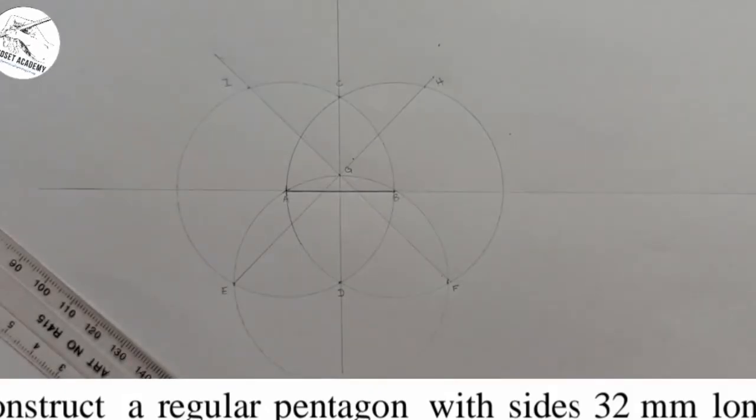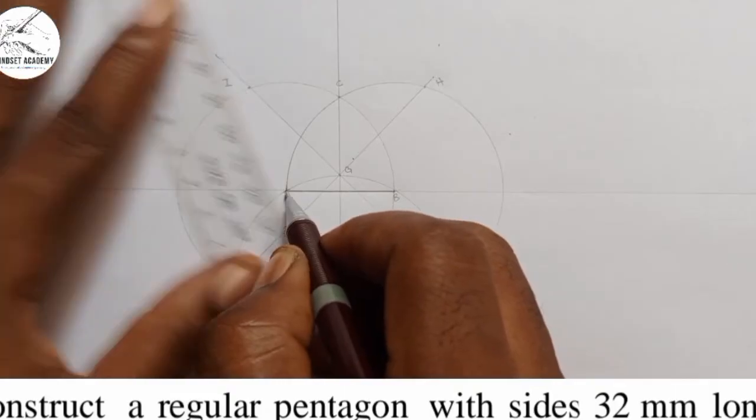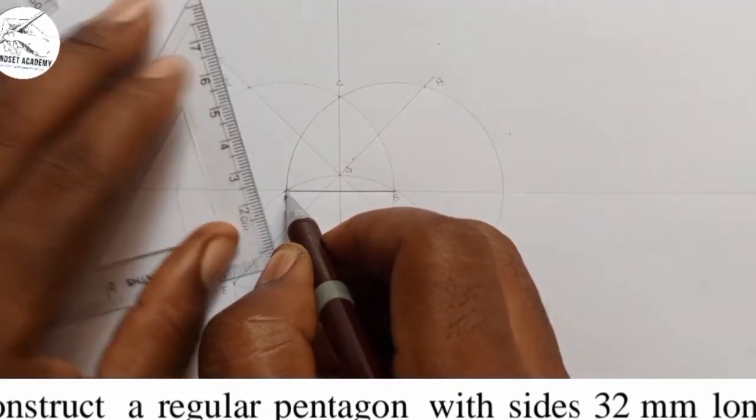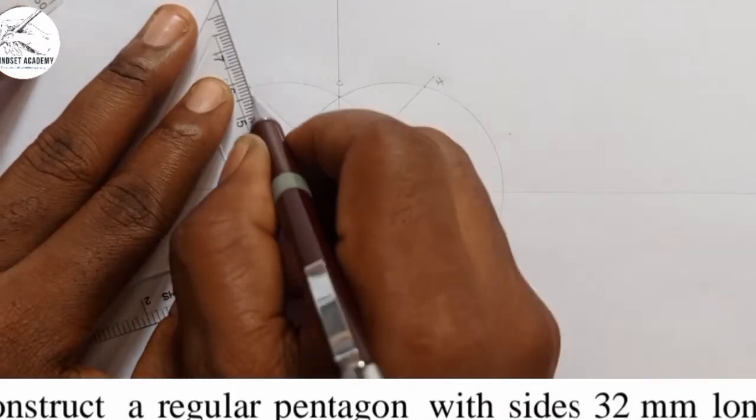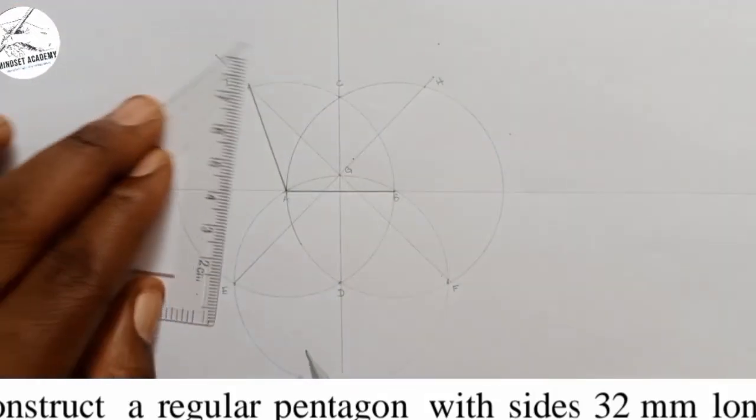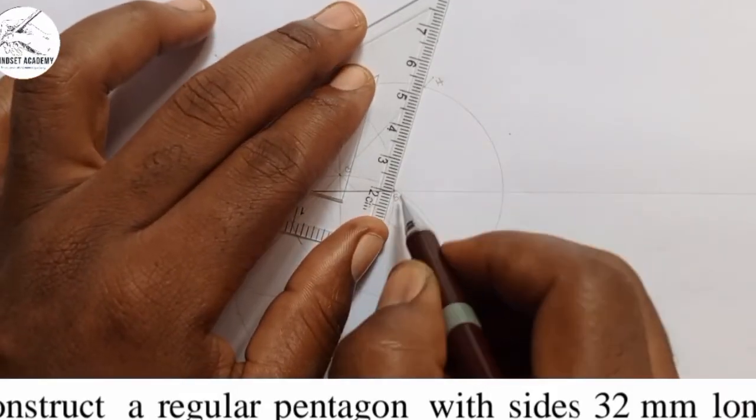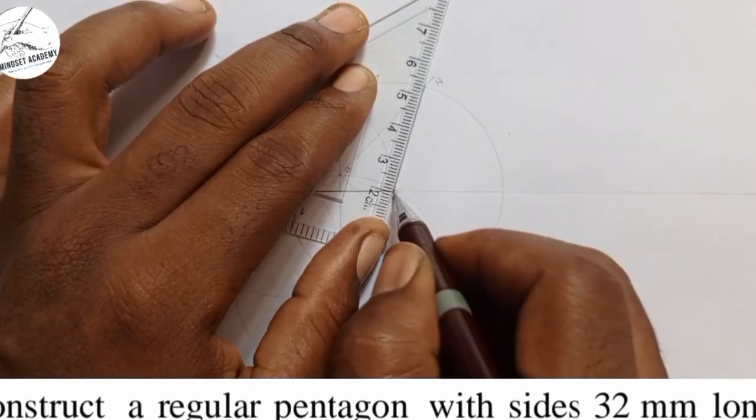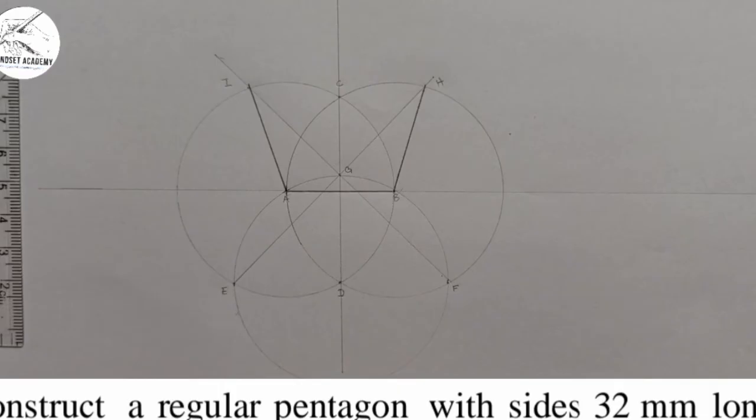Start again. And I am going to start joining. I will join A and I. That will be the second side of the pentagon. Then B and H. That will be the third side of the pentagon.